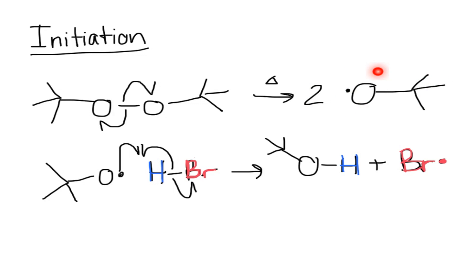It's the oxygen with a free radical there. What's going to happen is one of these is going to form a bond with the hydrogen of HBr. As a result you're going to get a bromine free radical. That's initiation.